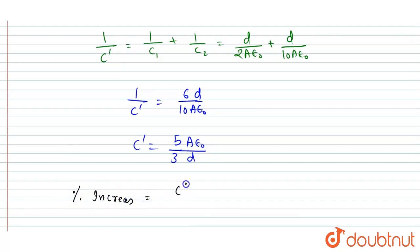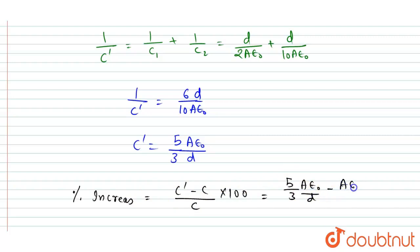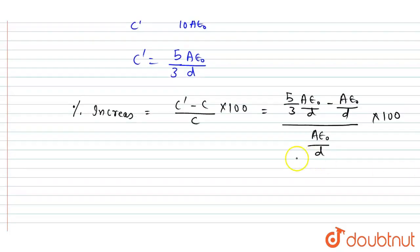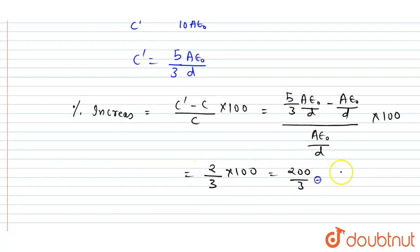Now I find the percentage increase: (C_dash − C) / C × 100. This equals [5/3 · Aε₀/d − Aε₀/d] / [Aε₀/d] × 100. The Aε₀/d cancels out, giving (5/3 − 3/3) × 100 = 2/3 × 100 = 200/3.